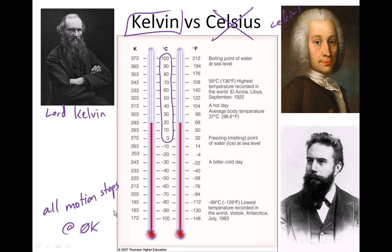Things slow down as they get colder according to the kinetic molecular theory. To get cold enough for everything to stop, in Celsius that would be negative 273 degrees. In Fahrenheit it would be around negative 500 — but we don't use Fahrenheit in science. For all gas law calculations, you must use Kelvin temperature. Remember that as T for temperature in Kelvin, or 'tink' — temperature in Kelvin. You must use that.